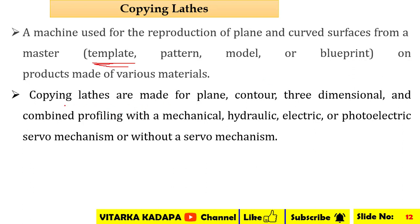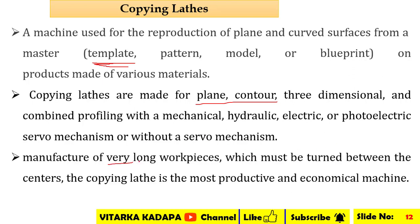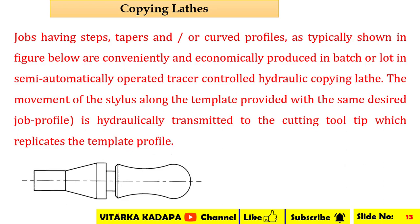The copying lathe is made for plain, contour, three-dimensional, and combined profiling operations — mechanical, hydraulic, electrical, and photoelectric — with and without a servo mechanism. It is particularly used for manufacturing long workpieces turned between centers. For example, if the distance between centers is 600 mm, that workpiece can be used. This job may have a certain curved profile, and it is convenient and economical to produce such parts in lot production.